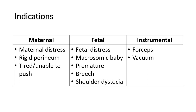Fetal indications are if there is fetal distress or a macrosomic baby where the baby is too large in size, a premature baby, breech presentation, or shoulder dystocia. Other indications include instrumental delivery such as using forceps or vacuum delivery.